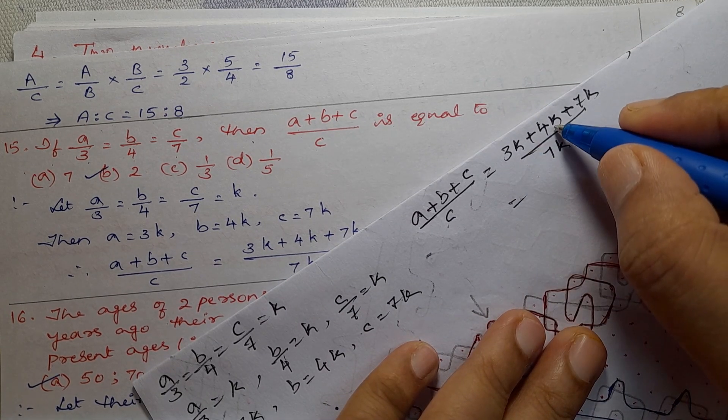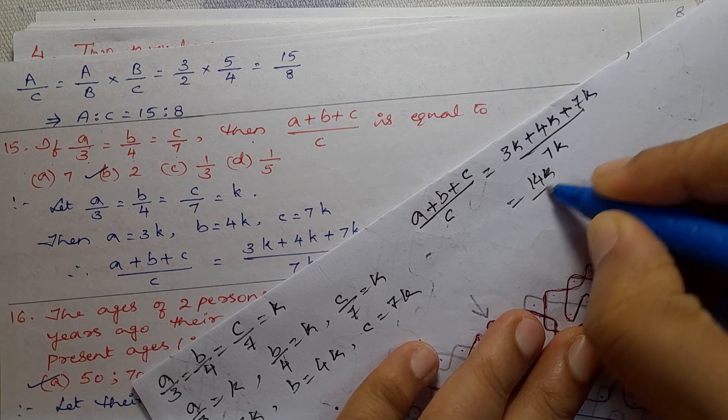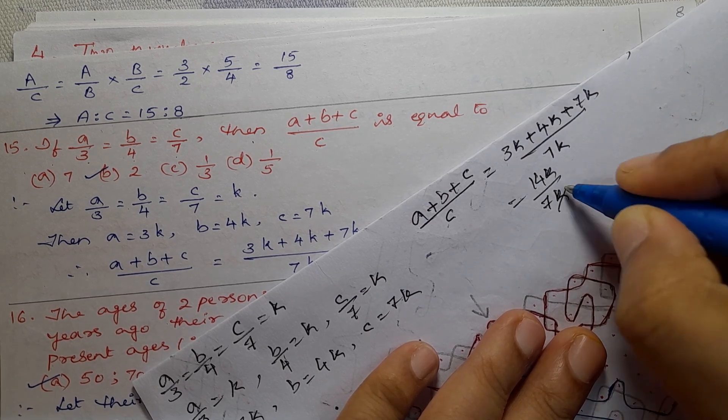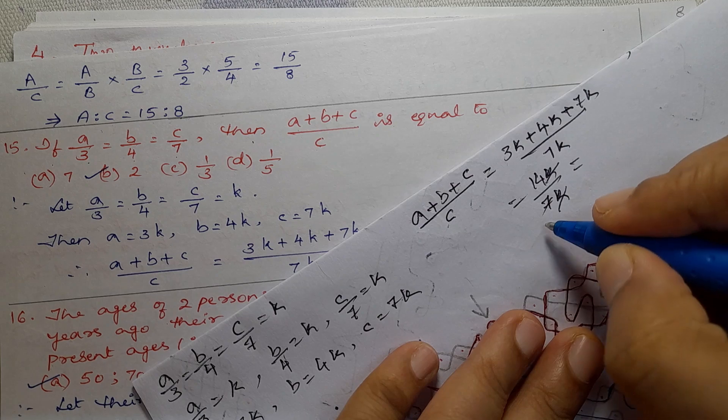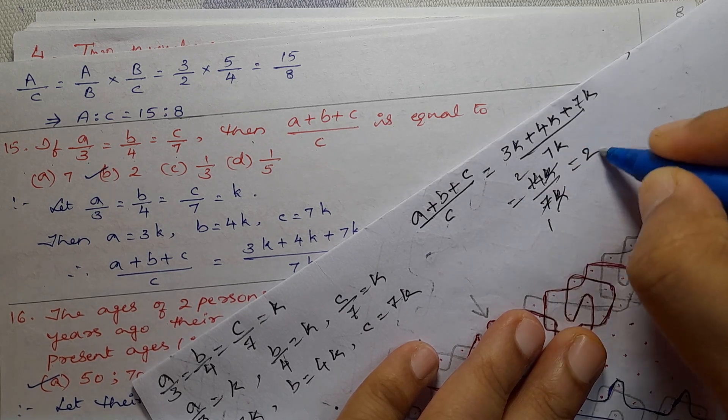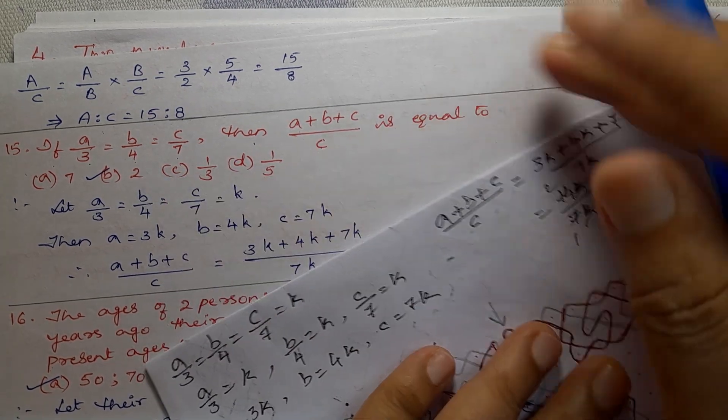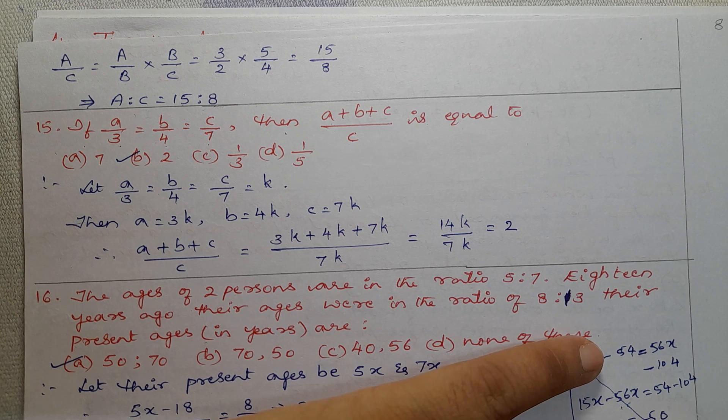3K plus 4K is 14K divided by 7K. K gets cancelled, 7 ones are 7, 7 twos are 14, so it is equal to 2. Option B is the correct answer.